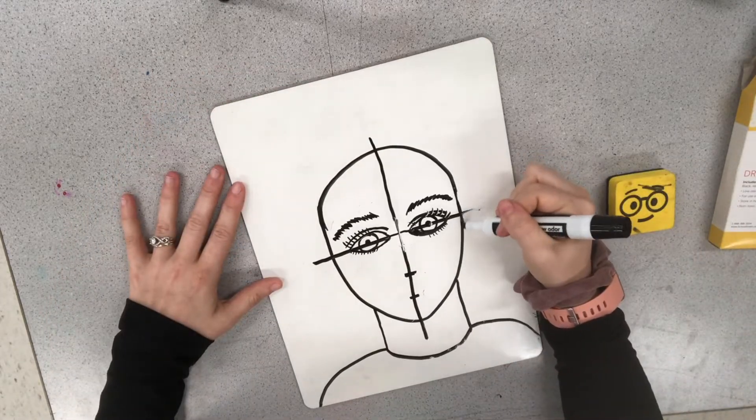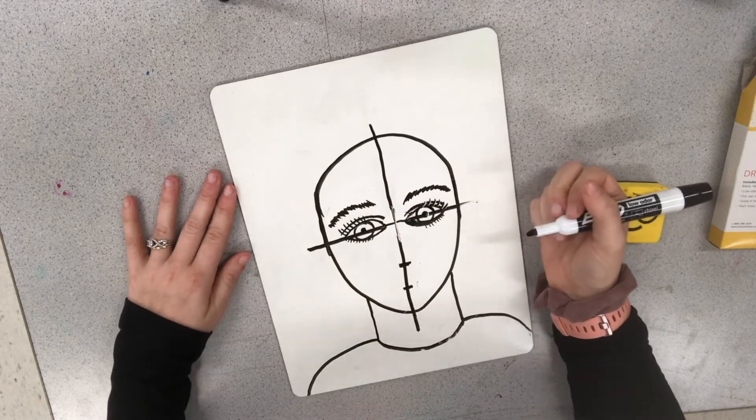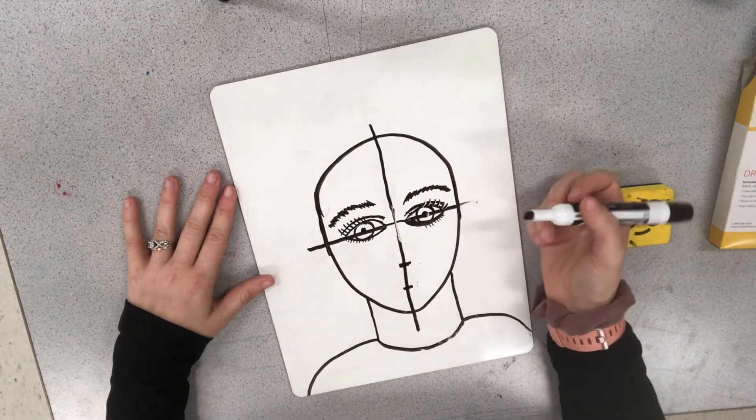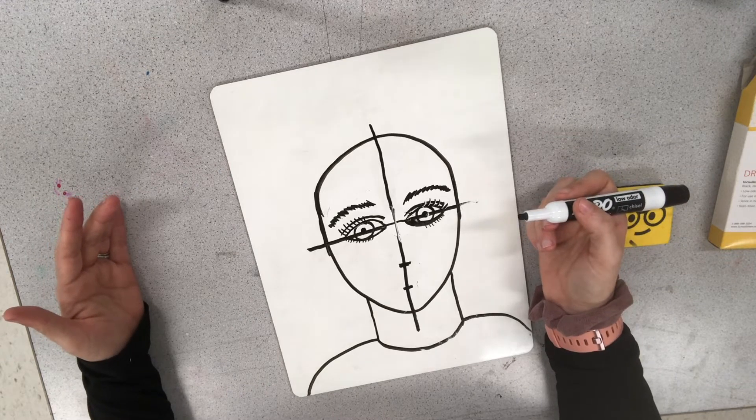So look at your person, see what way you would like to best make their eyebrows. Maybe your person has glasses. So that's another thing we can add in here.